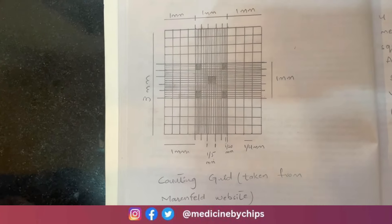Surrounding these smaller squares we have four bigger squares that are used for calculating the WBC count, and the area of this square is 1/4 by 1/4, equating to 1/16.